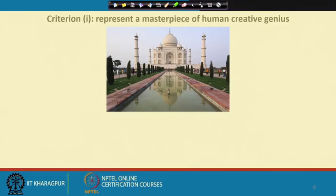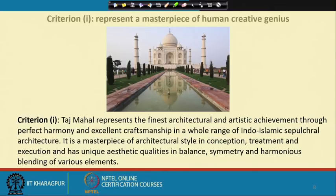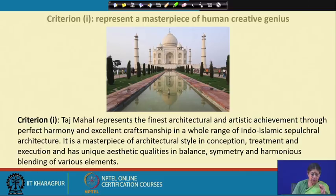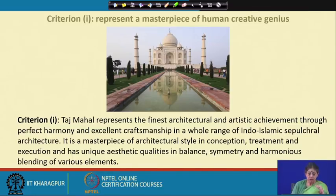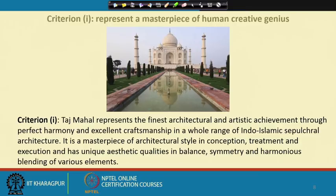When you see more of that it will give you an insight into the objective assessment of these sites. In the case of the Taj Mahal, what does it say? The Taj Mahal represents the finest architectural and artistic achievement through perfect harmony and excellent craftsmanship in a whole range of Indo-Islamic architecture. It is a masterpiece of architectural style in conception, treatment, and execution, and has unique aesthetic qualities in balance, symmetry, and harmonious blending of various elements. It is not enough to say it is a masterpiece of human creative genius — one has to justify how in its architecture, technology, and other attributes it is outstanding.